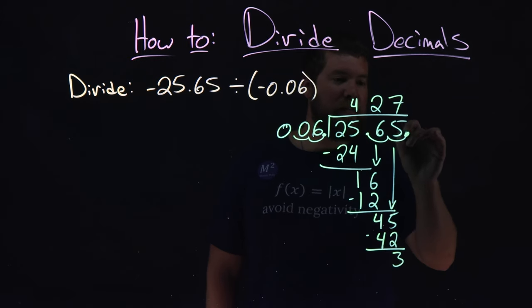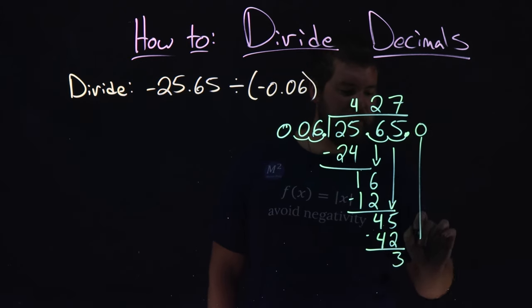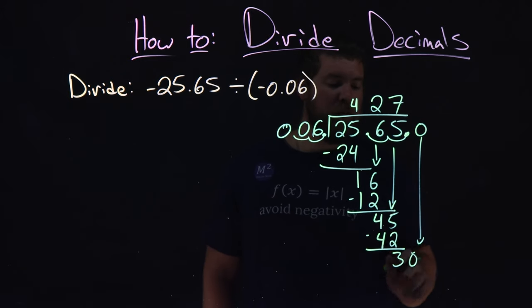We bring down the next place value, which we create as a 0. We add that to it. Now, does 6 go into 30? Yes.